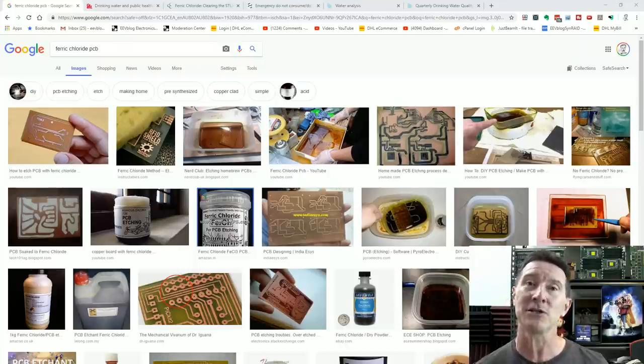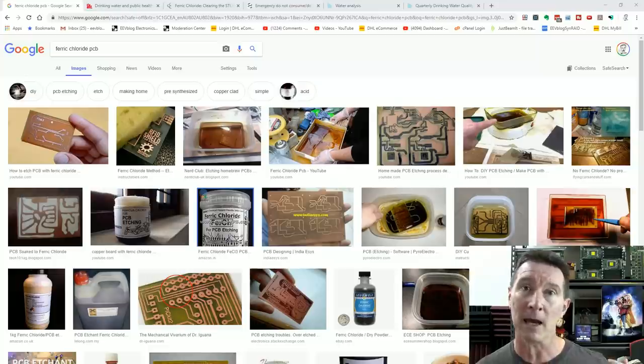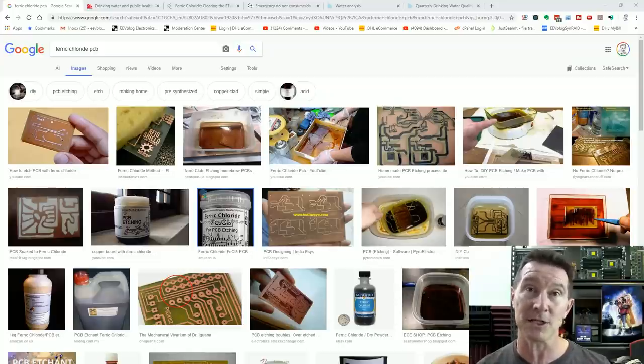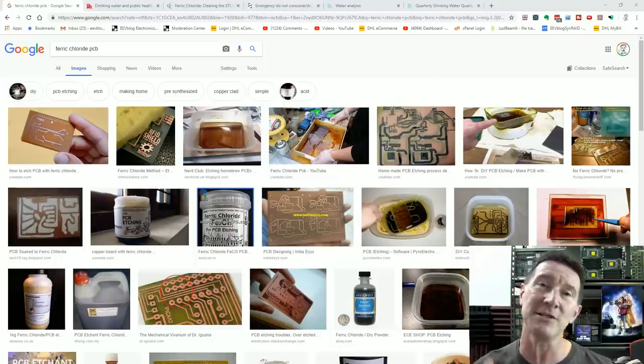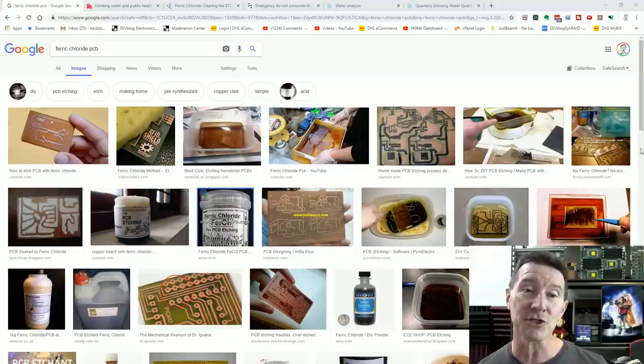So you just etch it and expose it, etch it yourself using various techniques. I used to use the positive pre-sensitized photo resist PCBs and then a photocopy onto a transparency overlay. And I used to do really decent boards, easily down to 8,000 double-sided. I could turn them around in an hour or two, no worries whatsoever.